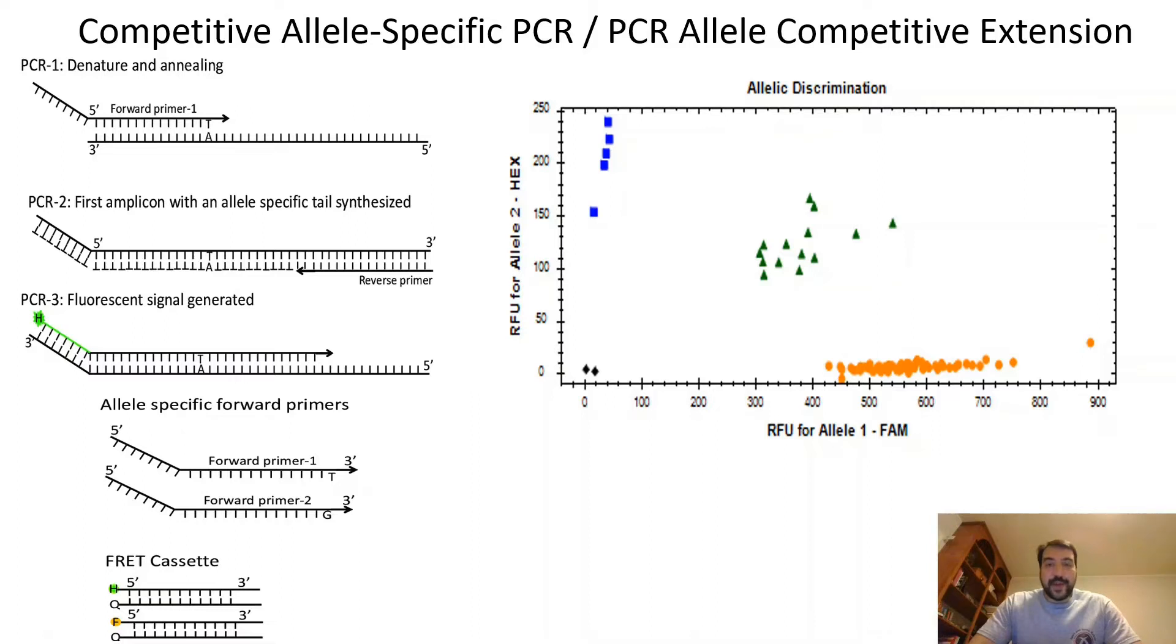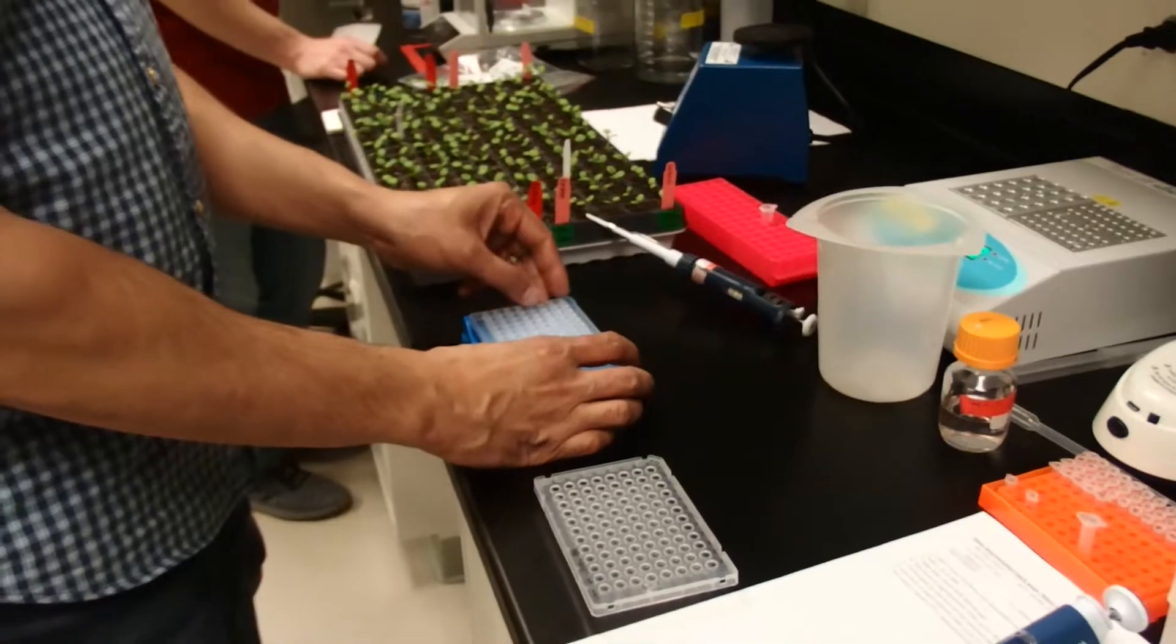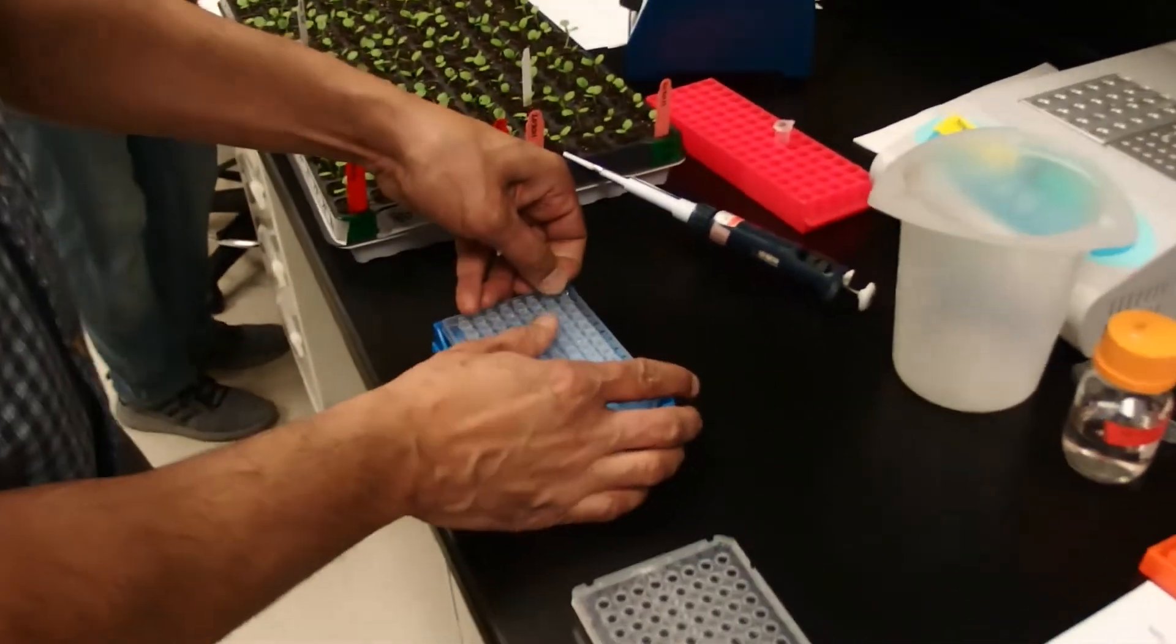In this video I'm going to show you how to set up an allelic discrimination PCR assay where we use Sigma extract and amp DNA that we prepared previously from plant tissue. With this assay we'll be able to separate alleles into homozygous mutant, heterozygous mutant, and wild type calls. I'm going to throw away all their strip caps because it's hard to keep track of all these guys.